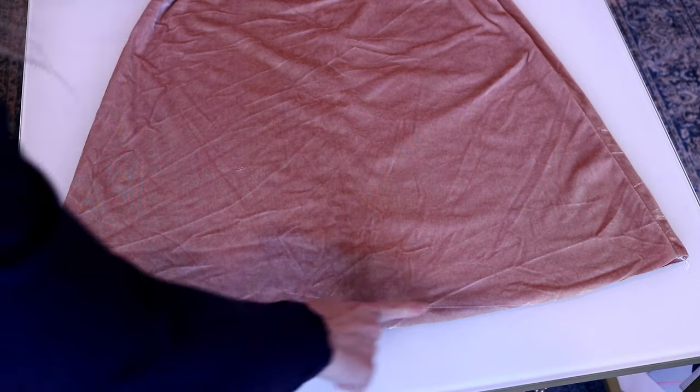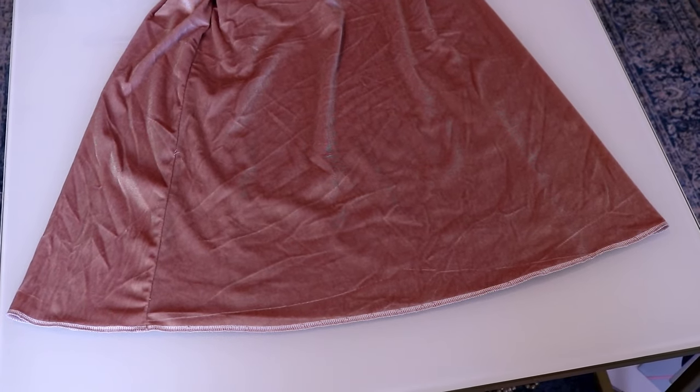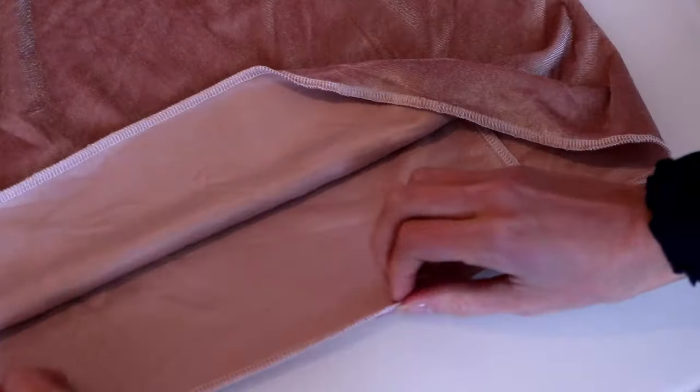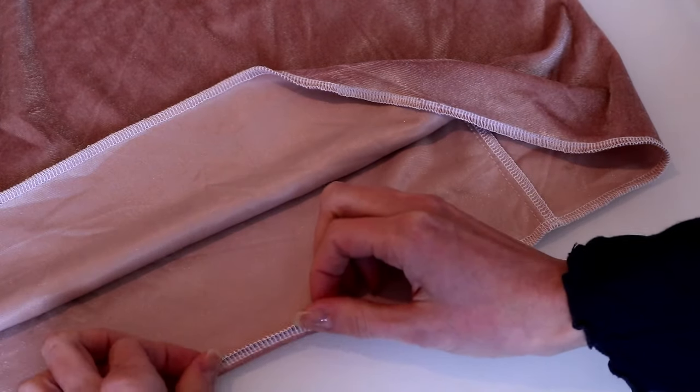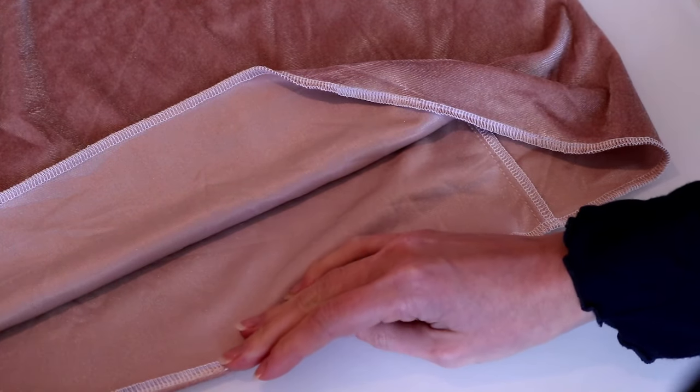Now it's time to hem the dress. Serge the bottom raw edge, fold it up and pin and baste the hem in place. Then stitch with a straight stitch.